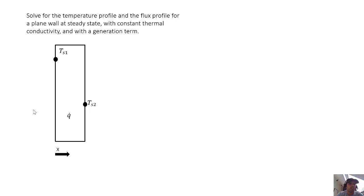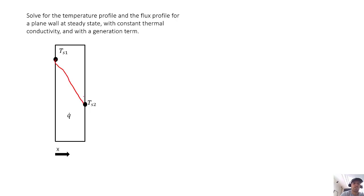In this video lecture we're going to solve the heat equation with a generation term for a plane wall system. This problem states: solve for the temperature profile and the flux profile for a plane wall at steady state with constant thermal conductivity and with a generation term. In the past we solved for the plane wall with no generation and found the temperature profile was just a straight line, implying constant flux. So what happens if there is a generation term?